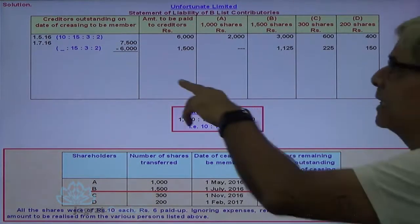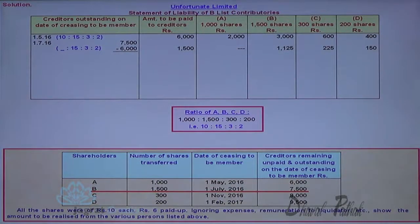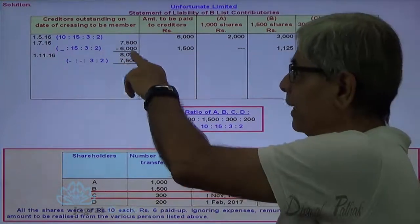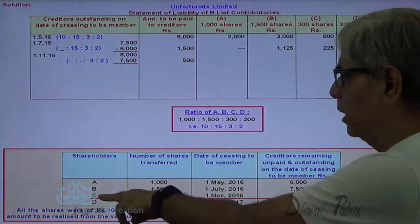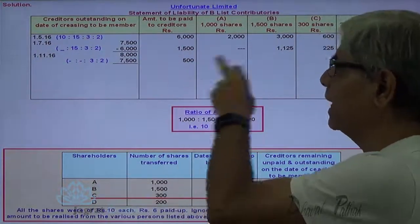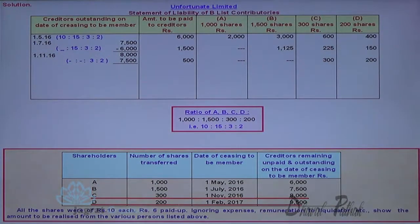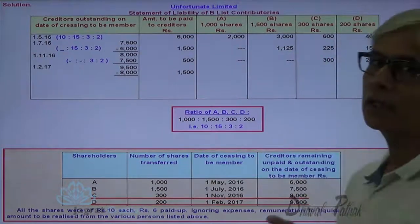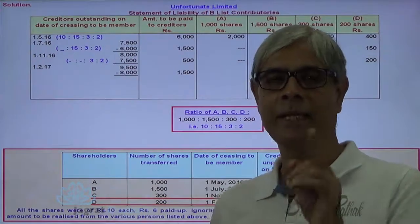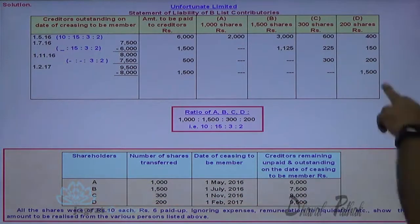Next, 8,000 is the liability. 7,500 is already distributed, so the remaining increase of 500 is to be shared between C and D, because at that date C and D are the members and A and B are not contributories. So 500 will be distributed in the ratio of 3 : 2 — that is 300 and 200 shares. Then the last increase in liability is 1,500. At that time, D alone is the contributory; A, B, C are not contributories as on 1st of February 2017. So D alone has to contribute for this 1,500. Liability to be contributed by D is 1,500.